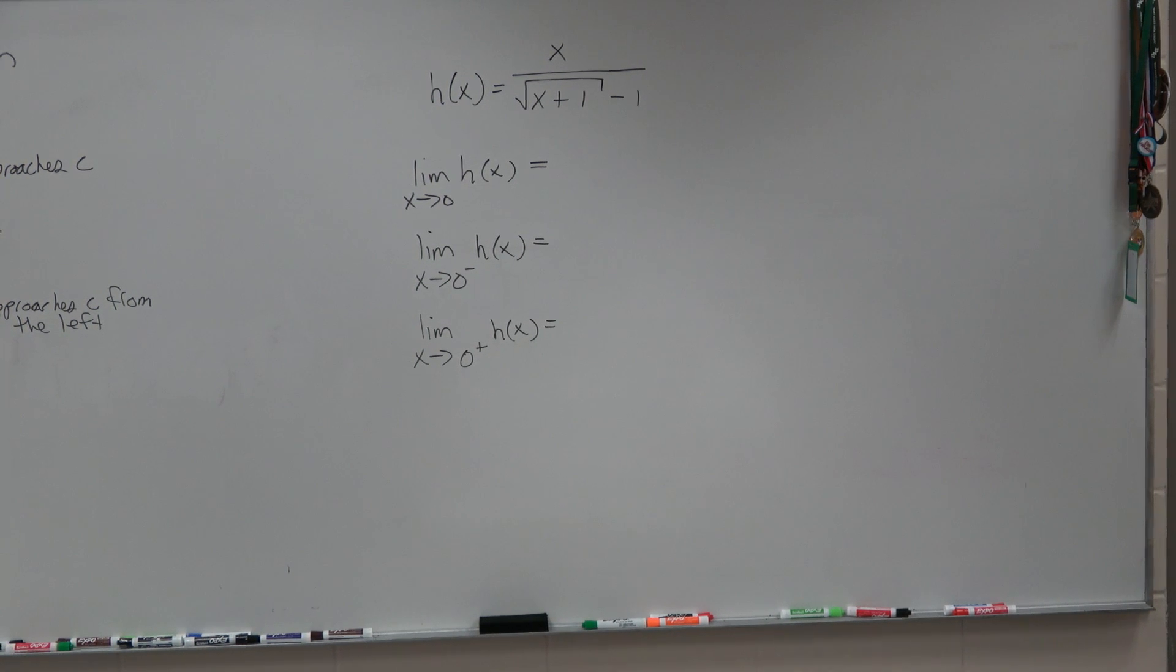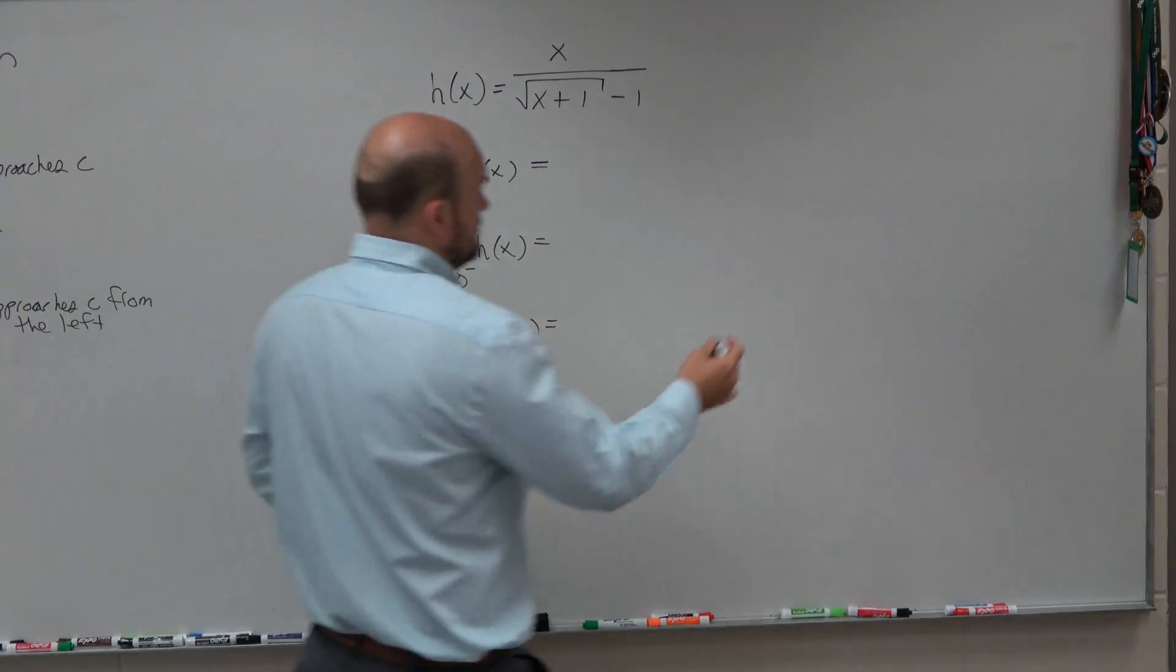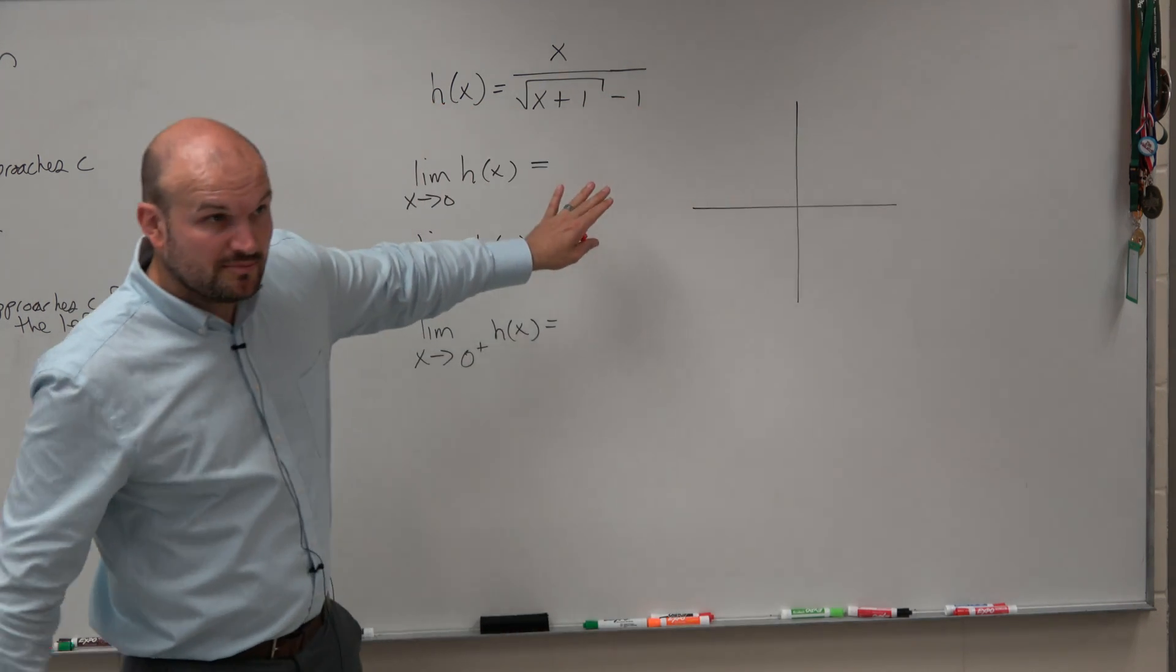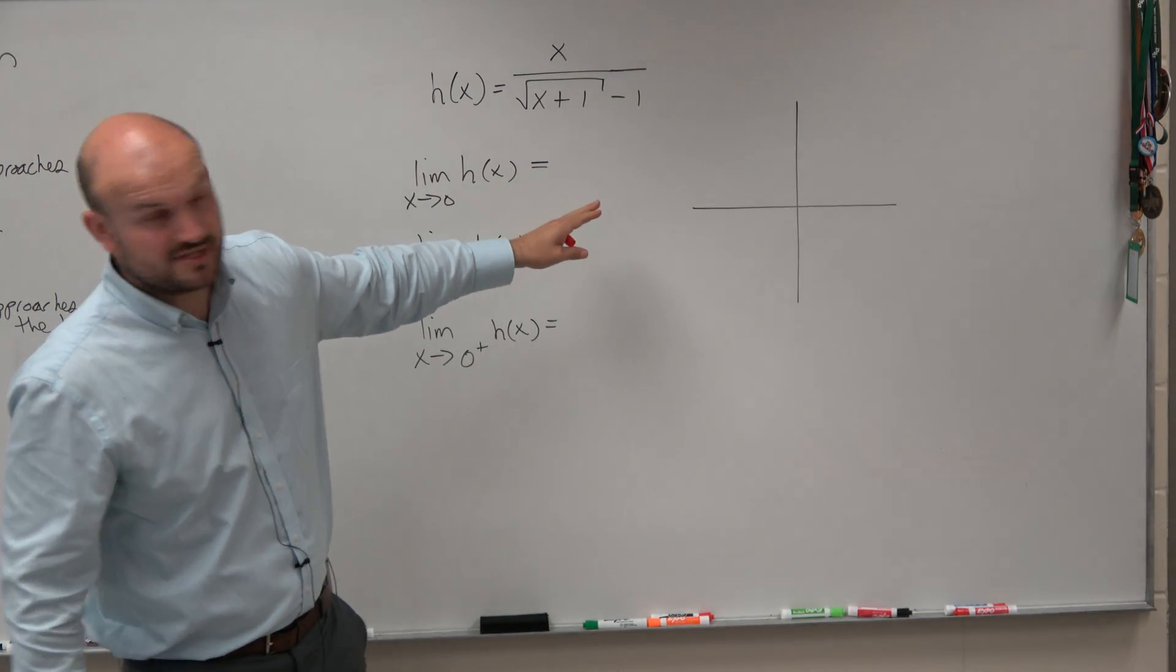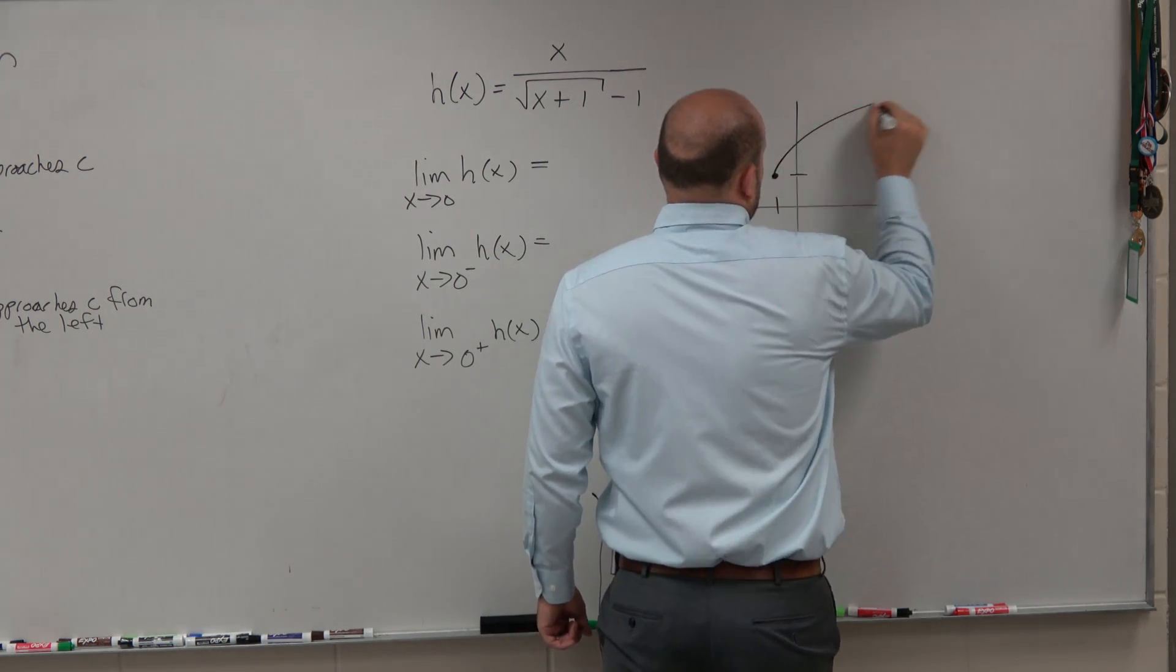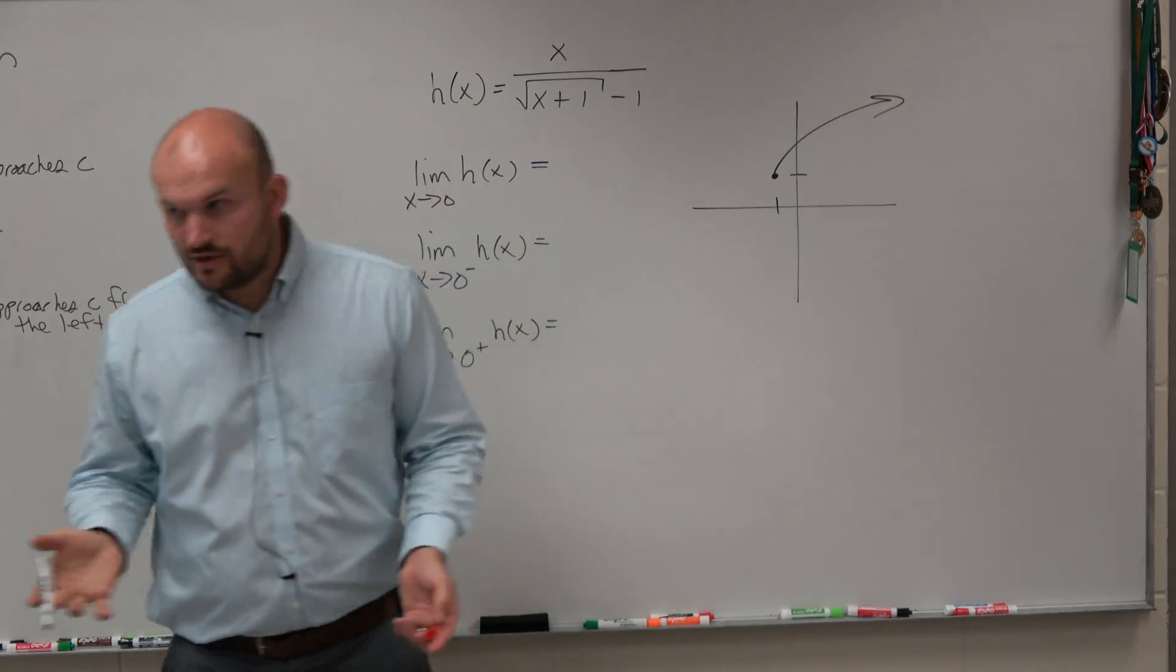Does the graph look like there's some value that it's approaching from the left and from the right? Yes. So this looks like a crazy equation, right? Probably none of you looked at this and said, oh, I know what the graph looks like. But it looks something like that, correct?